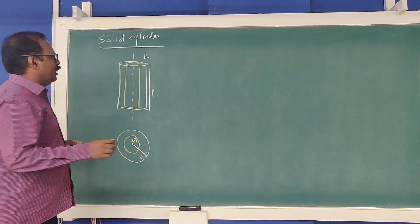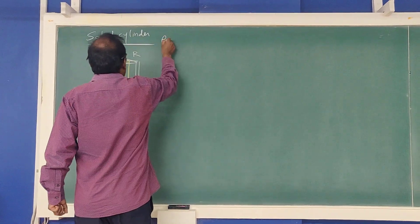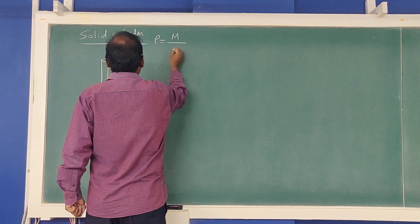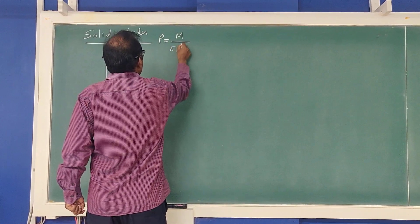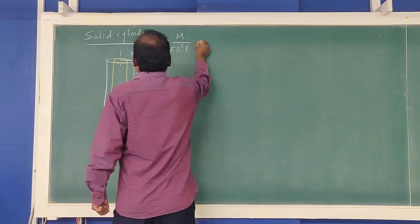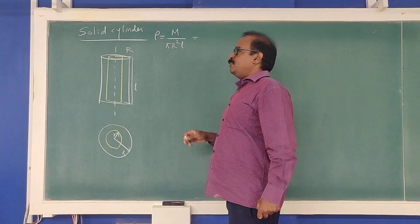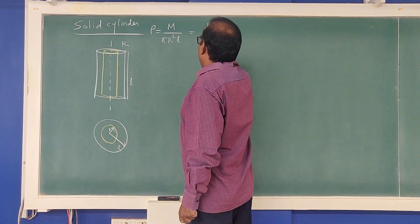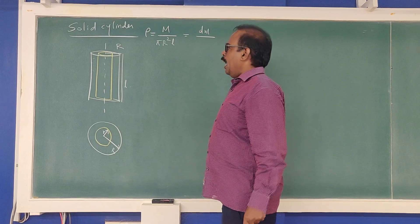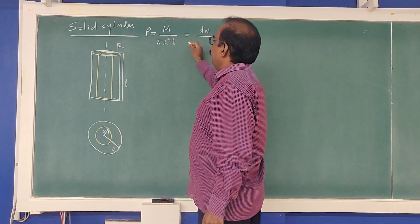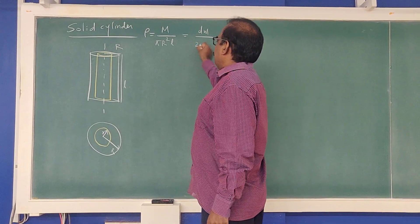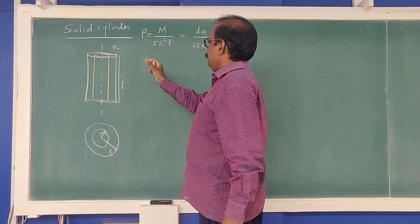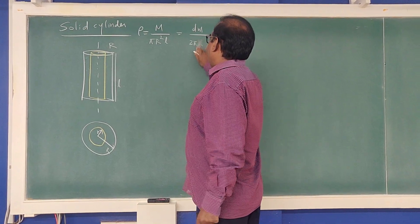We define density as mass divided by volume. The total mass of the cylinder is M, and the total volume is πR²L. For the small element, the mass is dm, and the volume is 2πr · dr · L, since the hollow cylinder element has circumference 2πr, thickness dr, and length L.